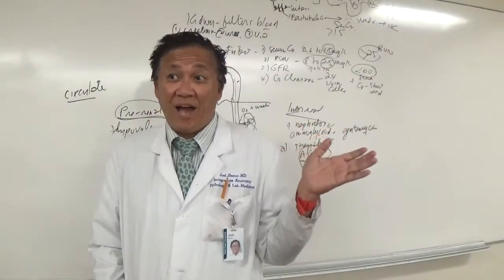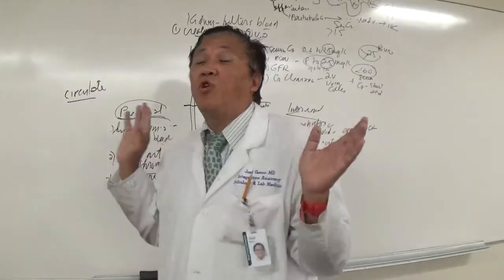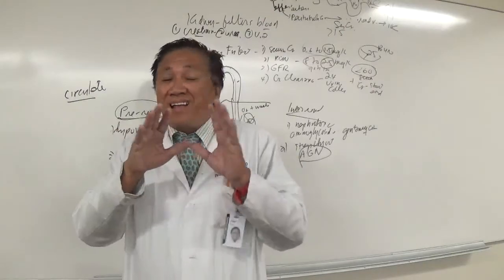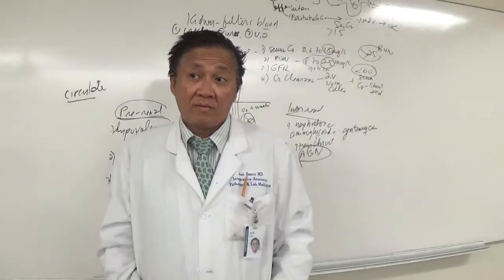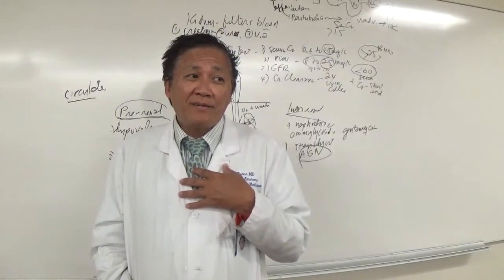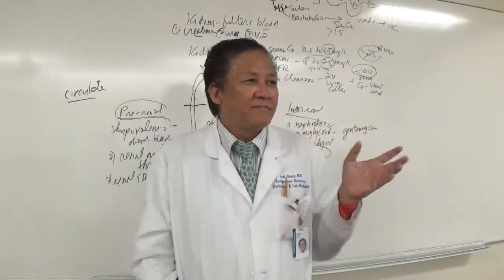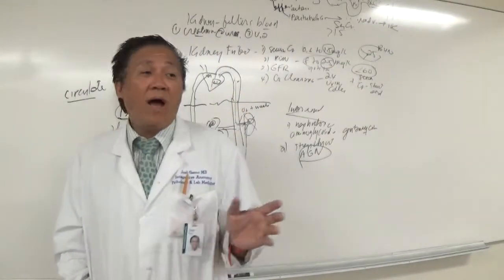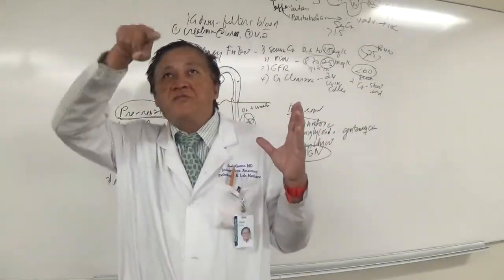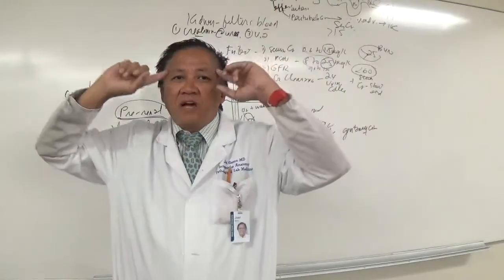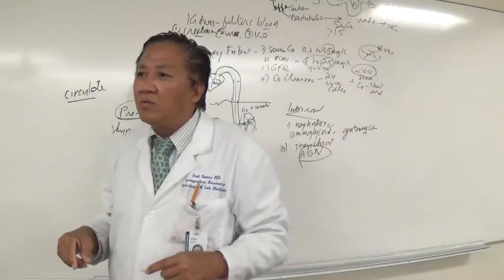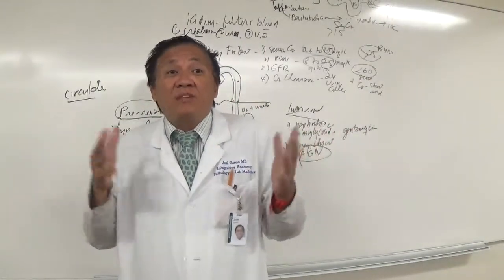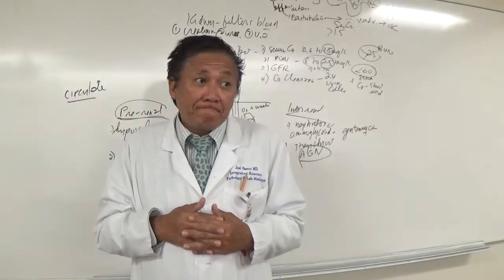Hematuria is not unique to glomerulonephritis — it can also occur with kidney stones, which alter the normal anatomy. Whenever blood appears in the urine, that's abnormal and we must determine why. As a doctor or nurse, we build a differential diagnosis — like Sherlock Holmes. Could it be glomerulonephritis? Could it be a kidney stone? We may order an ultrasound, CT scan, or MRI to find out. We need to determine the cause to properly treat and save the patient.